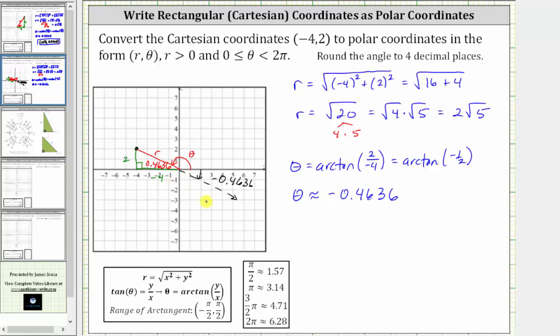Or because the two angles are in the opposite direction, we can simply just add pi to negative 0.4636 radians. So again, theta is approximately negative 0.4636 plus pi. Or we can also say theta is approximately pi minus 0.4636 radians. Of course, the result is going to be the same.